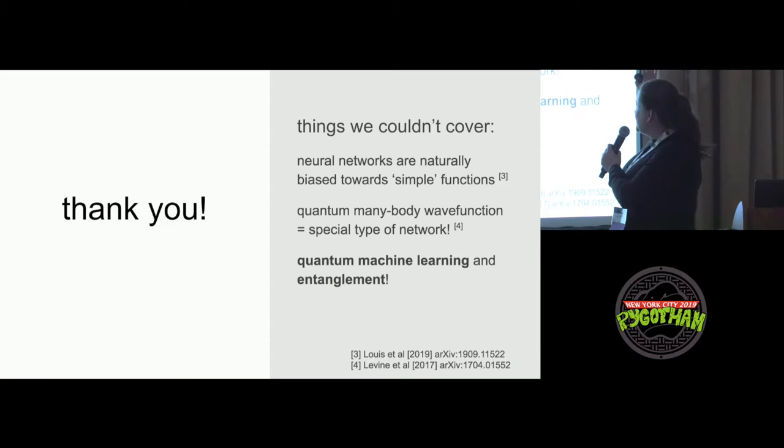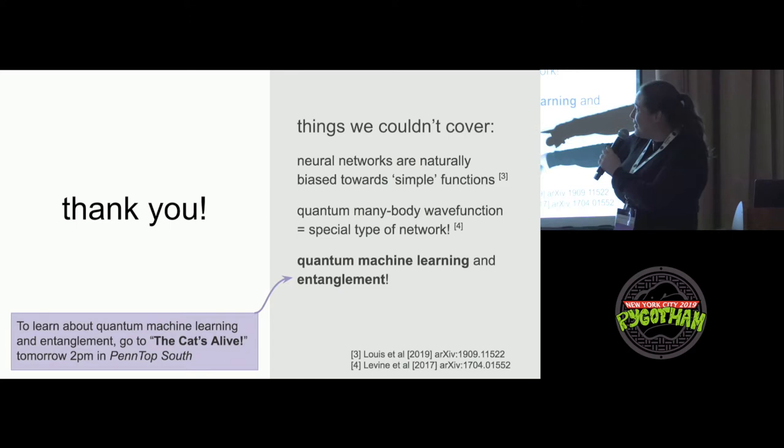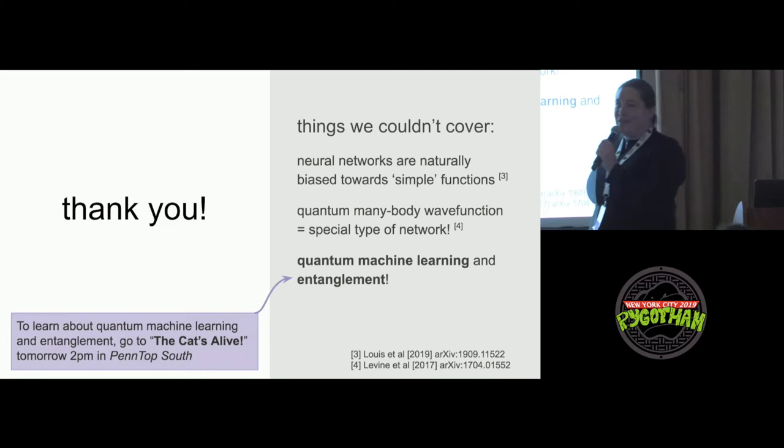There's a lot about this topic that I couldn't really cover. For example, there's empirical proof why neural networks are biased naturally towards simple functions. And somebody did the work. Actually, a quantum many body function, which is something that exactly describes a quantum material, you can find an exact mapping between that and a special type of neural network called a tensor network. And if you want to learn more about other topics, quantum machine learning or entanglement, visit our talk tomorrow. The cat's alive. It is. It is alive. Tomorrow in Pentop South. So I hope to see you then. And I'll take any questions.